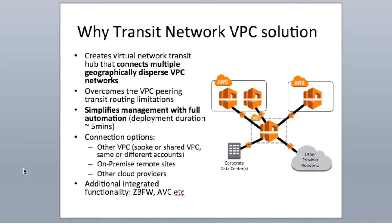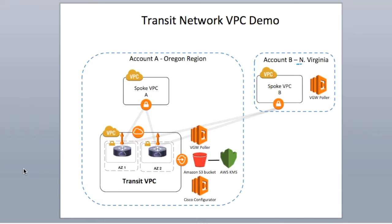This solution is fully automated through AWS CloudFormation template and Lambda functions. It will create the Transit VPC infrastructure, launch a pair of CSRs, and create tunnels to spoke VPCs that are tagged dynamically. The spoke VPC can be in the same account as Transit VPC or it can be in a different account. In this demo, we will create a Transit VPC and tag two VPCs — one in the same account and one in a different account, as shown in this diagram.